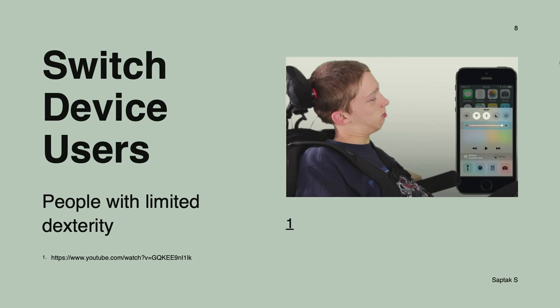A very famous user of a switch device was Stephen Hawking. A lot of people depend on switch devices. In the picture you can see a person whose chair headrest has a switch device — there are two switches, and he can use his head to press each button, and that's how he browses through the web.